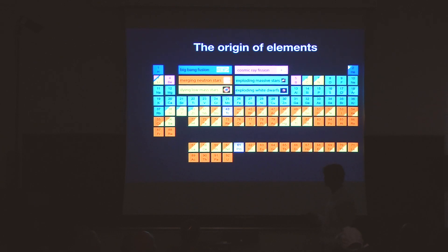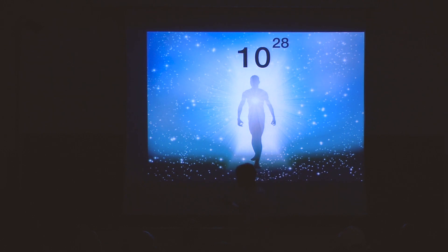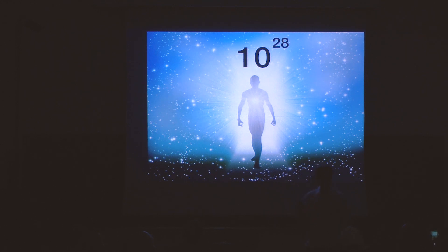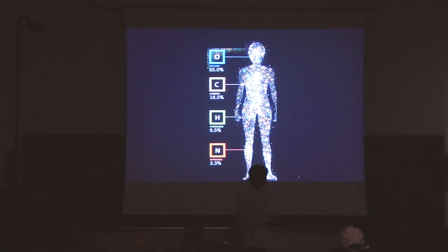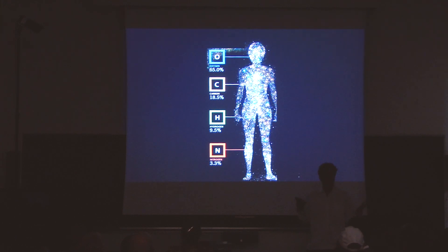So we're going to be a little self-centered. In our bodies, we have about 10 to the 28 atoms — we're incredibly numerous. We have more atoms in our bodies than stars in the universe, or grains of sand across the entire surface of the Earth. This is a 1 followed by 28 zeros, for those not familiar with scientific notation. The vast majority of our mass is oxygen, so that should be a central element.